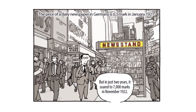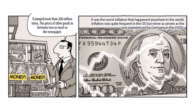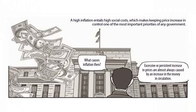The price of a daily newspaper in Germany was 0.3 marks in January 1921, but in just two years it soared to 7,000 marks in November 1922 — a jump of more than 200 million times. The prices of other goods in Germany rose just as much. It was the worst inflation that happened anywhere in the world. Inflation was quite frequent in the United States but never as severe as the one experienced by Germany in the 1920s. High inflation entails high social costs, making price control one of the most important priorities of any government.